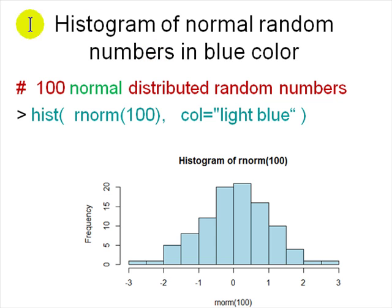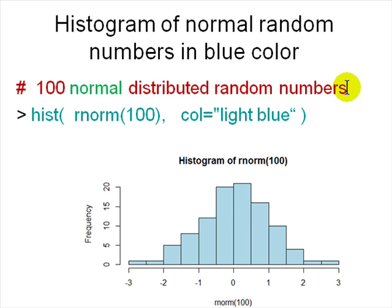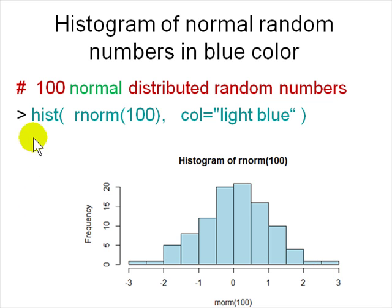Now let's look at normally distributed random numbers. Almost every distribution in real life and in physics is normally distributed. 'rnorm(100)' generates 100 normally distributed random numbers. Then you plot a histogram with 'hist(rnorm(100), col="light blue")'. The histogram shows that the mean is around 0 and most values are between -2 and 2.